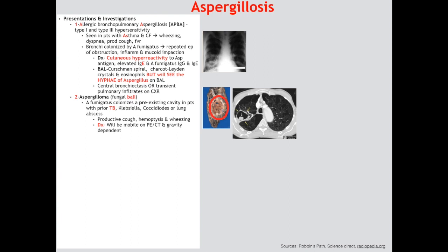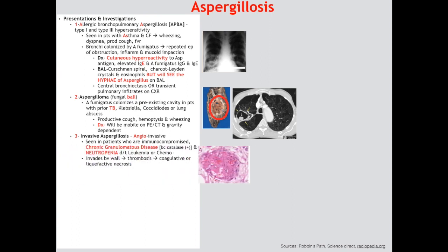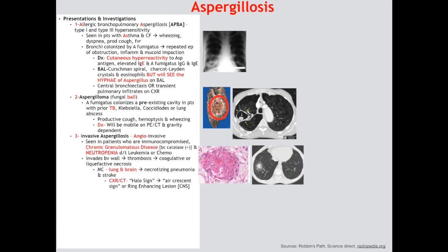Last and most severe is invasive aspergillosis. It is angio-invasive because its tropism is to the blood vessel, occurring in patients who are most severely immunocompromised — especially patients with CGD, because Aspergillus is catalase positive. The pathogenesis involves invasion of the blood vessel wall leading to thrombosis and coagulative or liquefactive necrosis. The two most common sites are the lung and brain, causing necrotizing pneumonia or stroke respectively. On chest X-ray or CT you will see a halo sign, also called an air crescent sign. On CNS CT you will see a ring-enhancing lesion. It can also cause paranasal sinus invasion leading to necrosis — important to remember because mucor also does this.